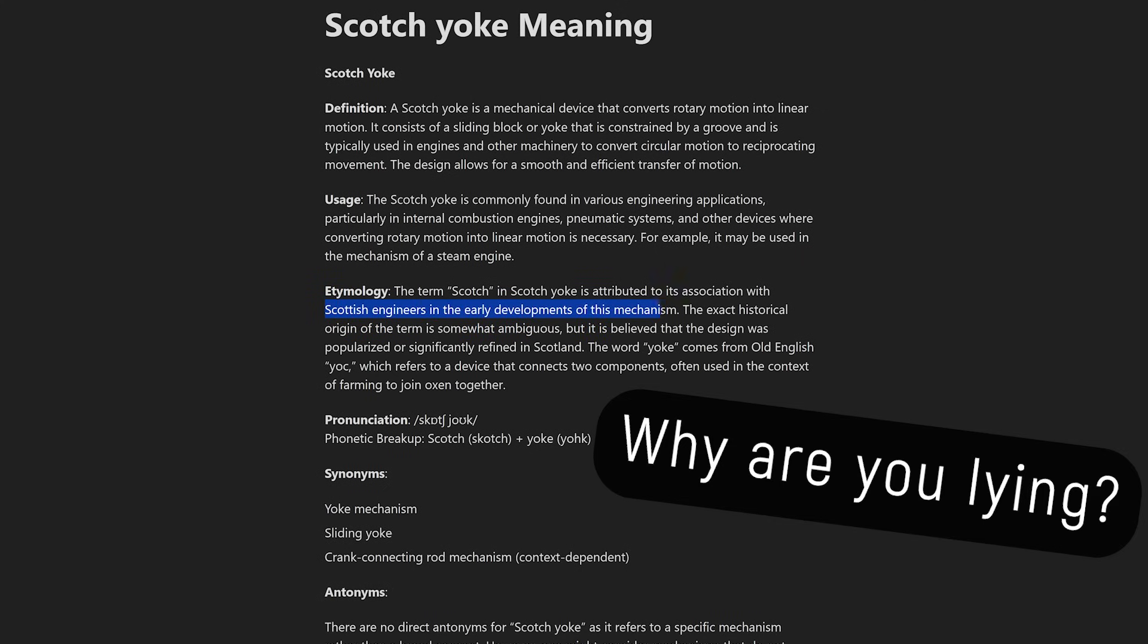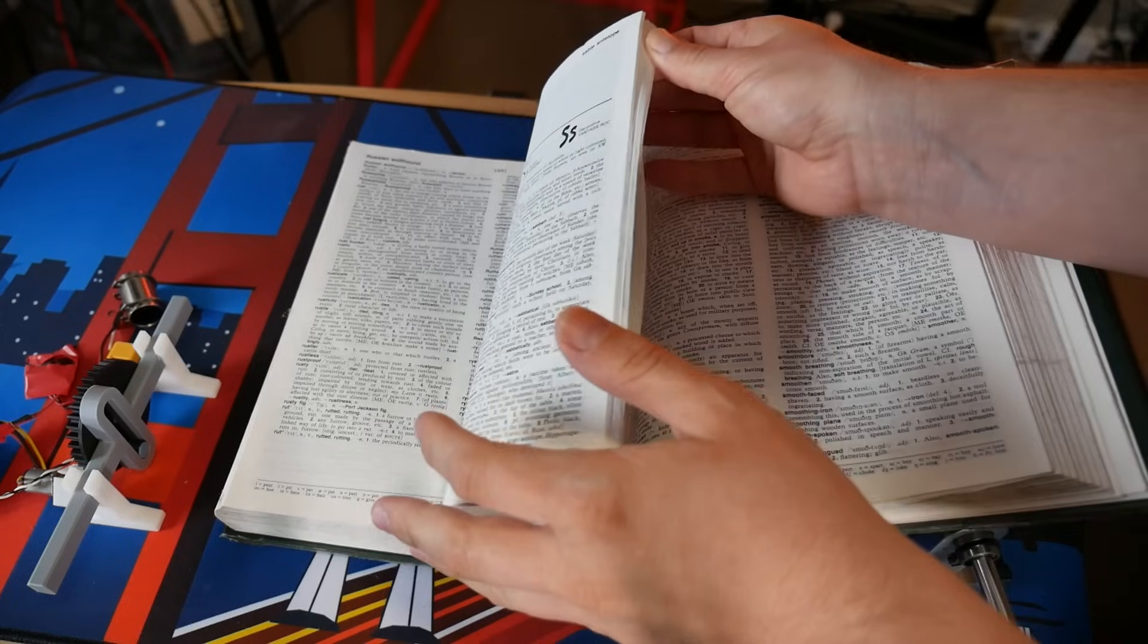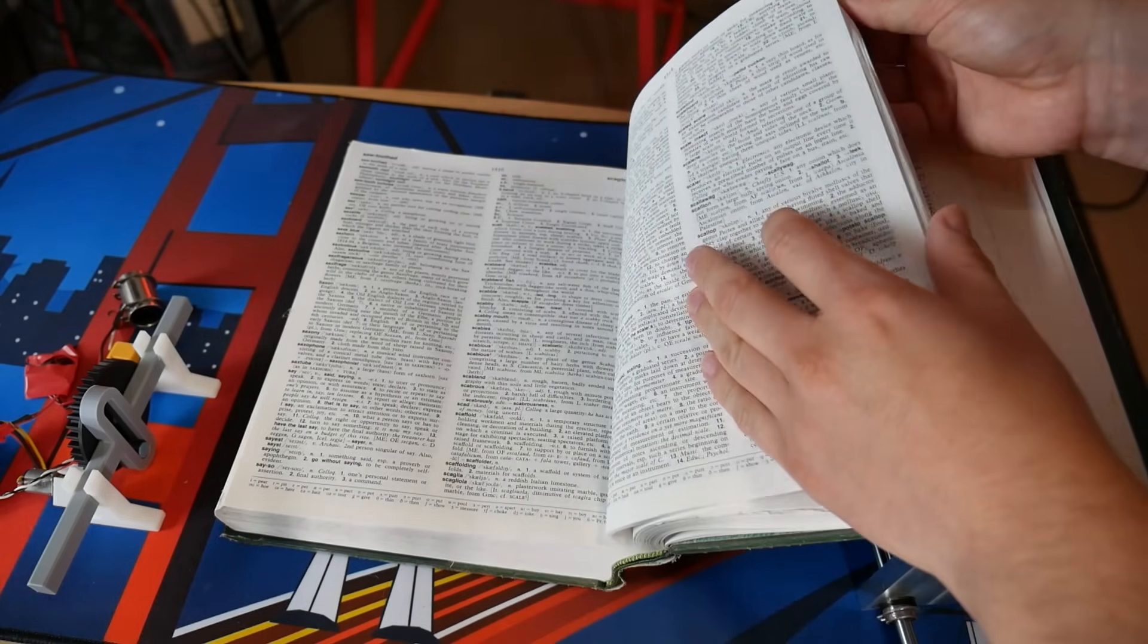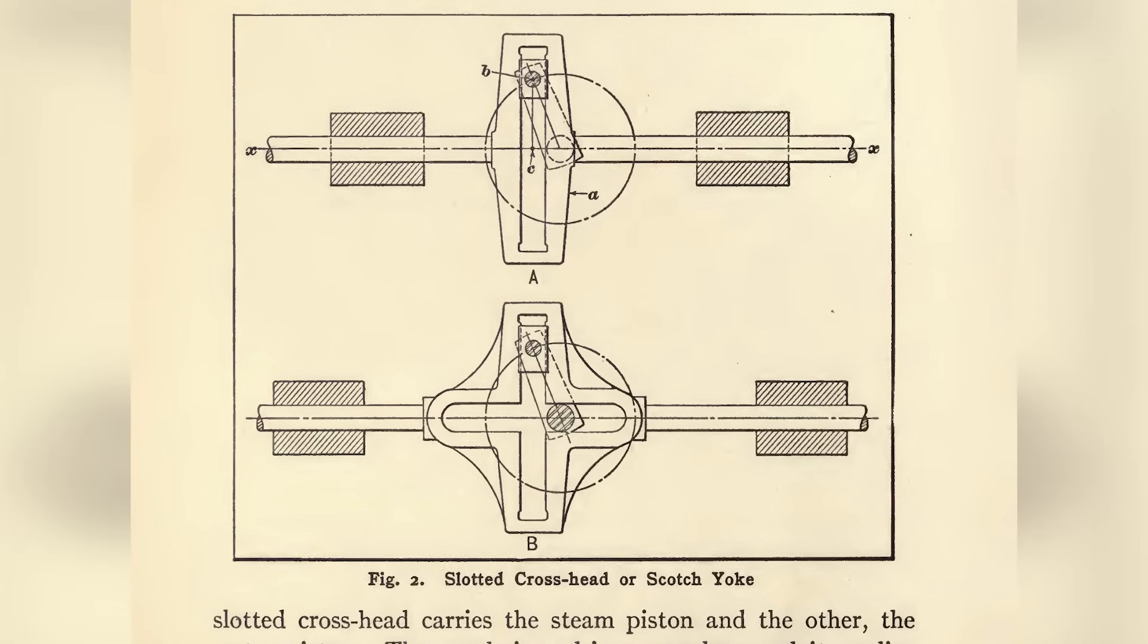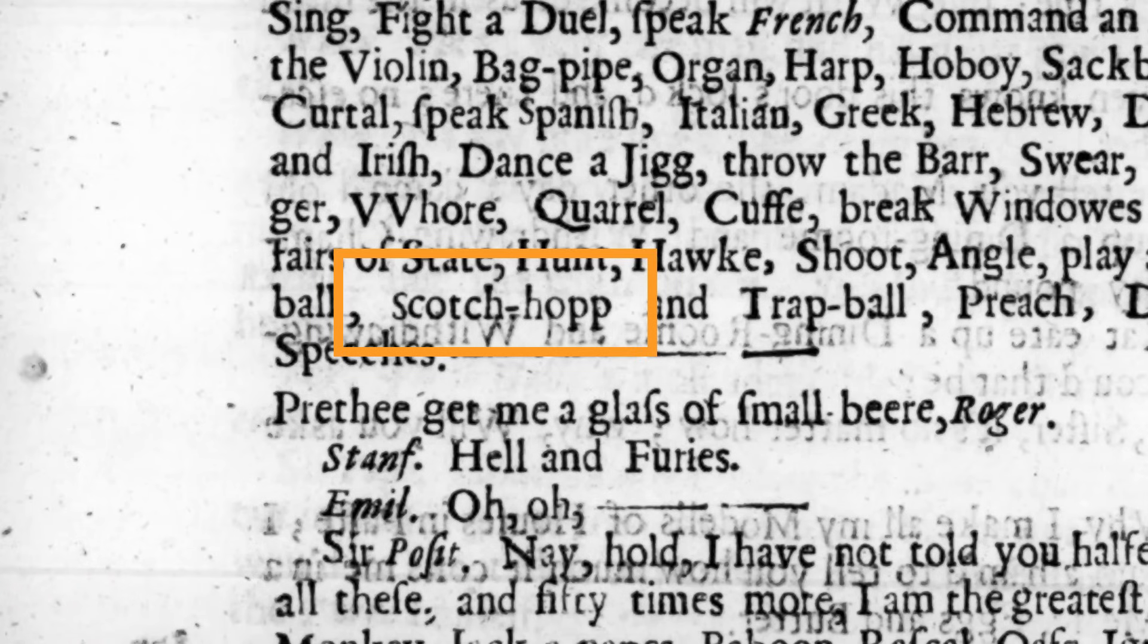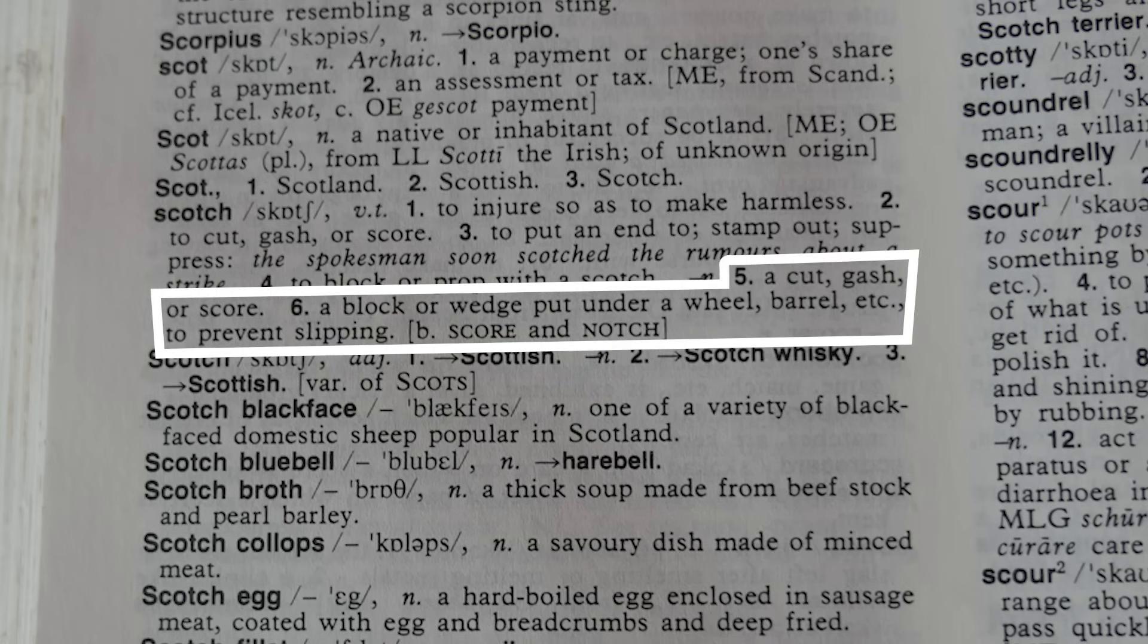Many people, including every AI service out there, seem to think that it refers to a Scottish origin of the device, but in my opinion, this link is completely baseless. I think it actually refers to the linear cutout in the same way that hopscotch refers to lines drawn, and indeed another meaning for Scotch is a cut, gash, or score.